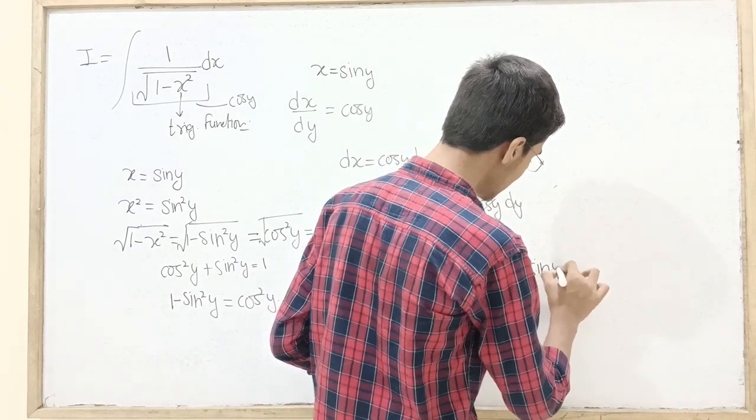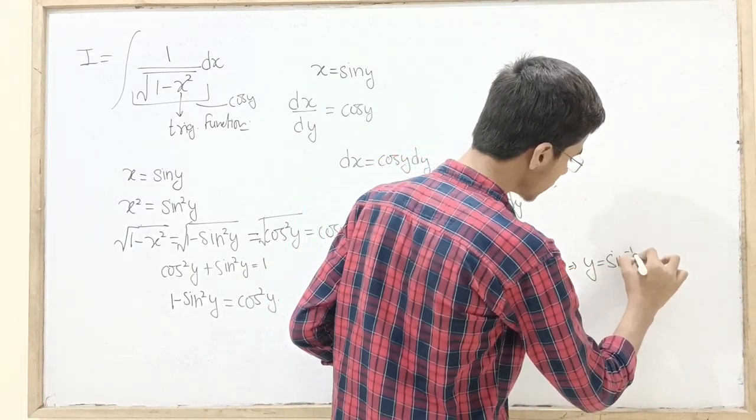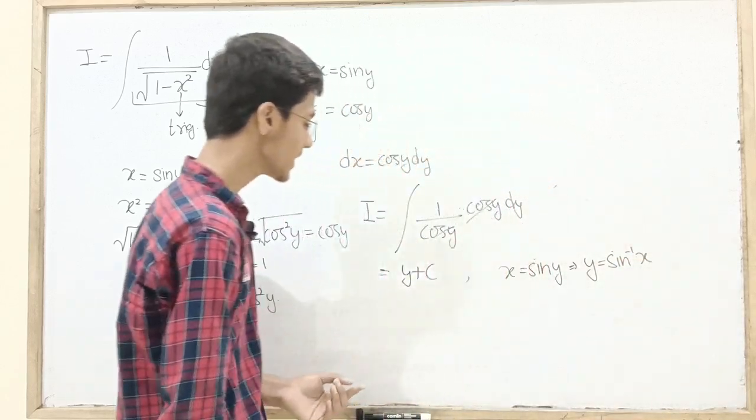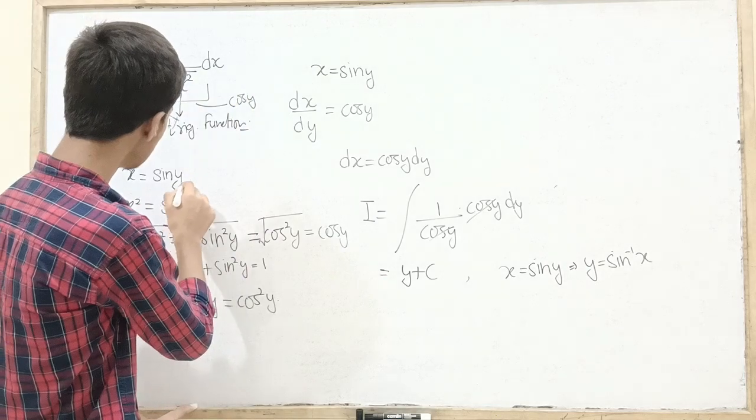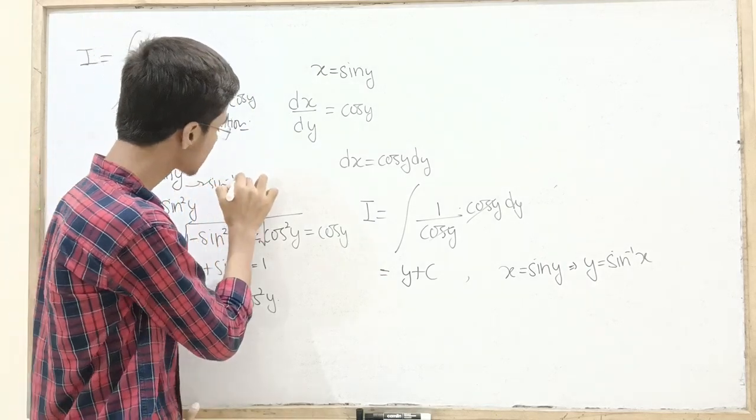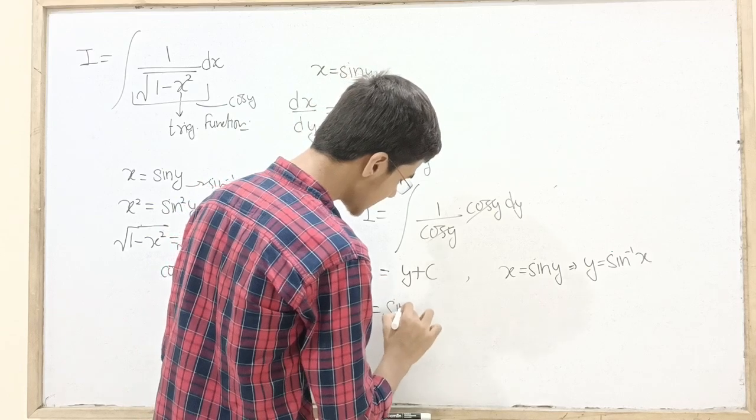x was sin y. You have to say y is equal to sin inverse of x. Then you have to replace y with sin inverse of x. This is the final integral value.